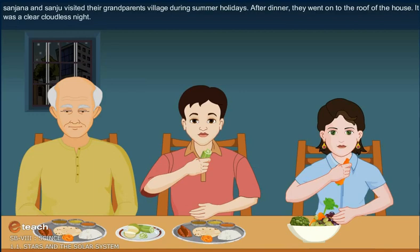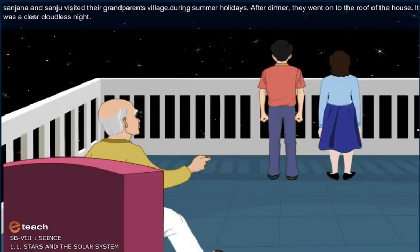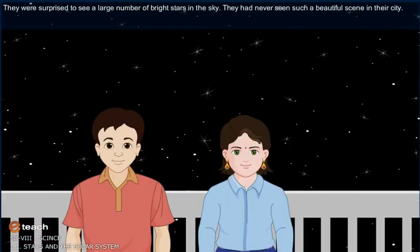Sanjana and Sanju visited their grandparents' village during summer holidays. After dinner, they went on to the roof of the house. It was a clear, cloudless night. They were surprised to see a large number of bright stars in the sky. They had never seen such a beautiful scene in their city.